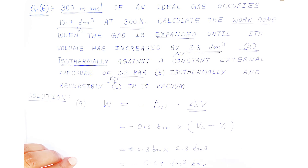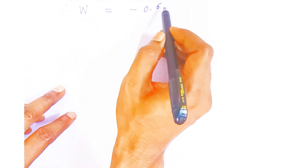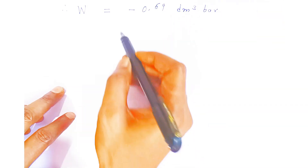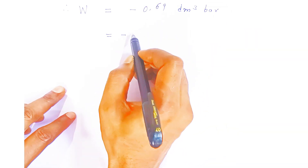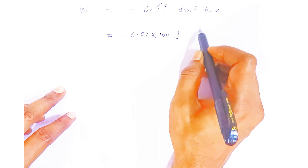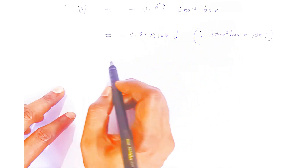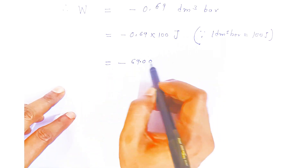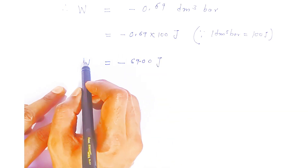Now we have to convert dm³·bar into joules. Since 1 dm³·bar equals 100 joules, we multiply -0.69 by 100, which gives us -69 joules. So the work done is -69 joules — the gas loses 69 joules of energy in this isothermal expansion against a constant external pressure.